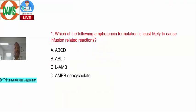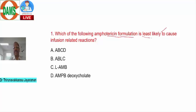In this video we discuss pharmacology GT paper. The first question: which of the following amphotericin B formulations is least likely to cause infusion-related reactions? Options are: amphotericin B colloidal dispersion, amphotericin B lipid complex, liposomal amphotericin B, and amphotericin B deoxycholate (conventional amphotericin B).